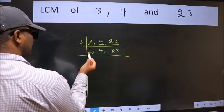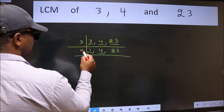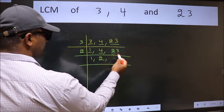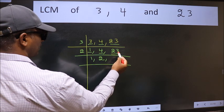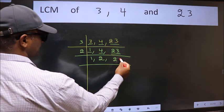Now we got 1 here. So focus on the next number 4. 4 is 2 times 2. The other number 23 last digit 3 not even. So this number is not divisible by 2. So we write it down as it is.